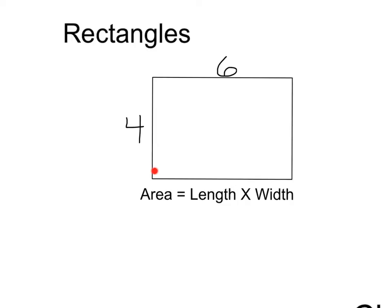in rectangles, we can always multiply the length and the width, and that would tell us how many square units are inside the rectangle. In this case, we would have 4 times 6, and that would give us 24 square units.